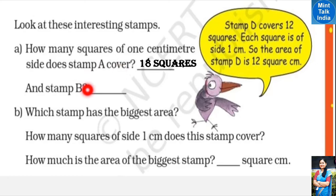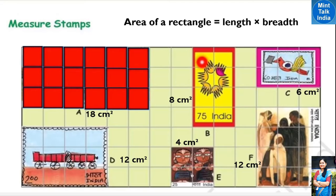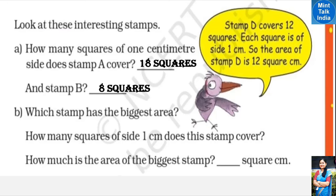In the same way, we have to count how many squares stamp B covers. Counting: 1, 2, 3, 4, 5, 6, 7, 8. So the answer is 8 squares for stamp B.